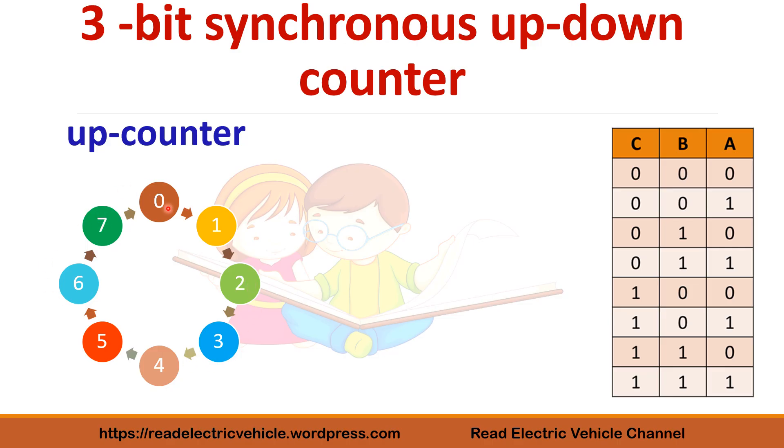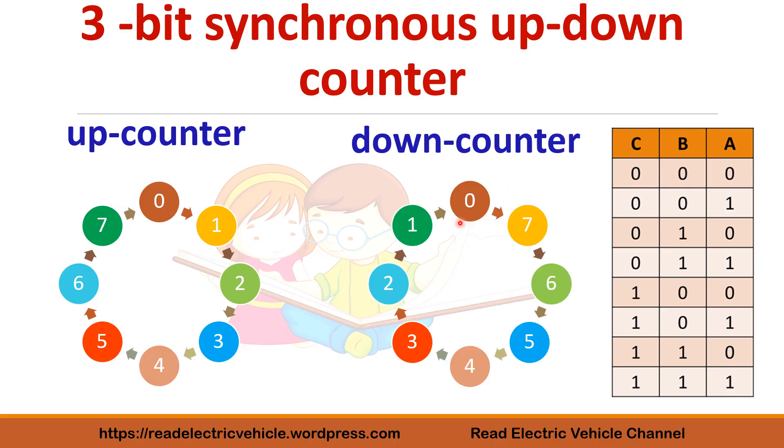After 7 it comes back to 0. What is a down counter? Down counter means instead of counting forward, it counts in reverse direction. You can start from 7 or 0. If it is 0, the next state will be 7, then 6, 5, 4, 3, 2, 1, 0. It counts in the reverse direction.